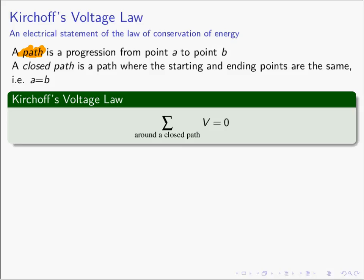A closed path is where you go up and down in energies and you end up where you started from. This leads us to the definition of Kirchhoff's Voltage Law. Kirchhoff's Voltage Law says that the sum of the voltages around a closed path must be equal to zero. The voltages are changes in energy levels as you go from one point to another, and you add up all these energy level changes until you get back to the same energy level you started from — and KVL says that equals zero.